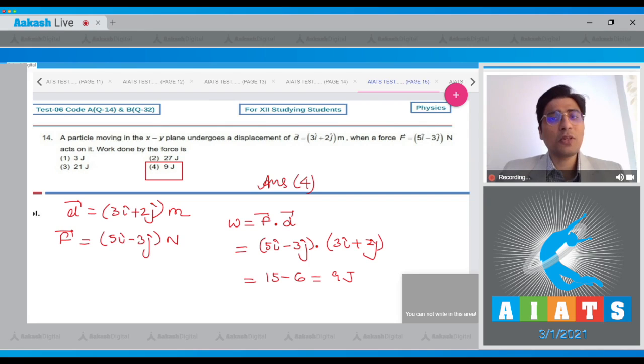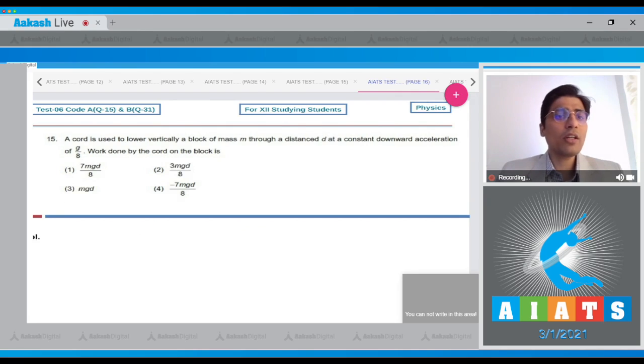Now, let us proceed to the question number 15. In this question, a chord is used to lower vertically a block of mass m through a distance d at a constant downward acceleration of g by 8. The work done by the chord on the block is? Let this be the block.